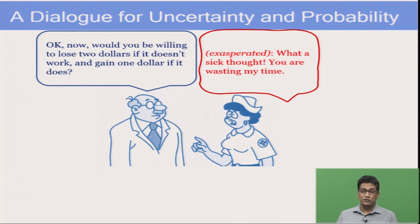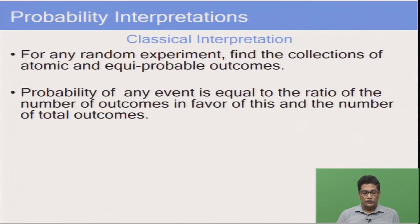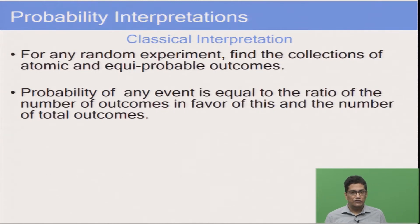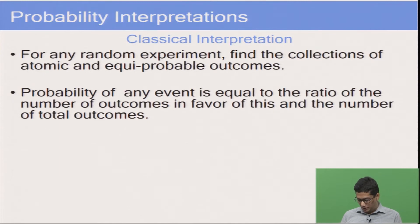The relative tries to ask very different questions to the nurse every time in the hope of getting the answer he wants. In the next slides, I am going to talk about three interpretations of probability which a common person generally understands. In the first interpretation, known as the classical interpretation, we define probability as follows: for any random experiment we first find the collection of atomic and equiprobable outcomes. The probability of any event is equal to the ratio of the number of outcomes in favour of the event divided by the total number of outcomes. Let us take an example — we roll a dice and ask what is the probability of getting an even number.